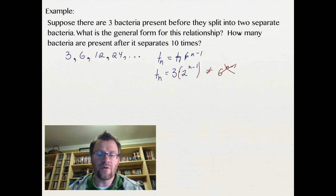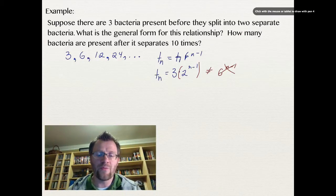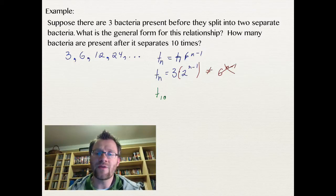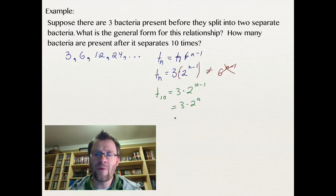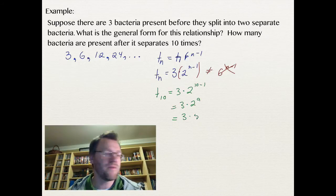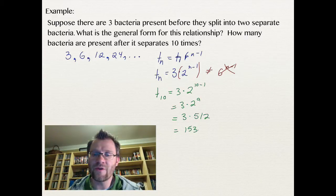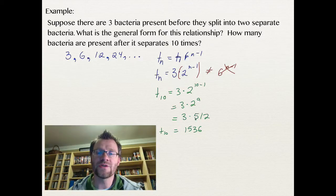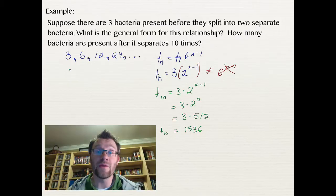So the second part of the question says, how many bacteria are present after it separates 10 times? Well, that just means we're looking for the 10th term. So T10 equals 3 times 2 to the power of 10 minus 1, which is 3 times 2 to the power of 9, and 2 to the power of 9 is 512, and 3 times 512 is then 1,536. So after 10 splits or separations, there's going to be 1,536 bacteria, where there had only been 3 to begin with.